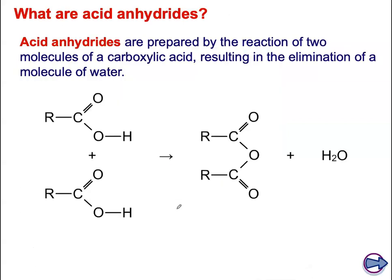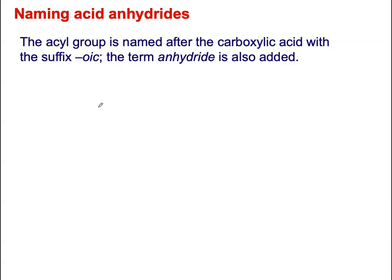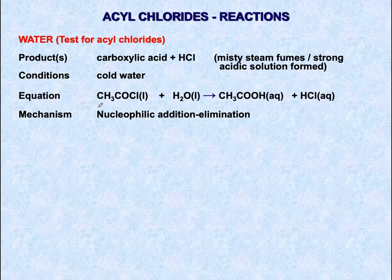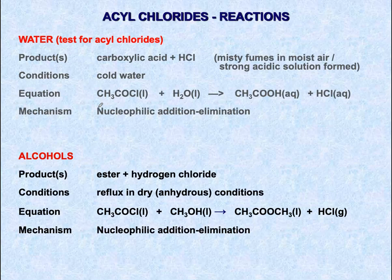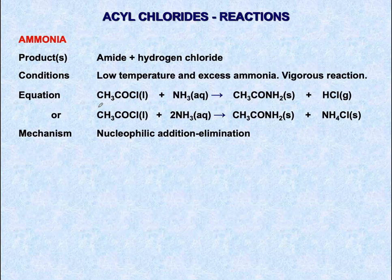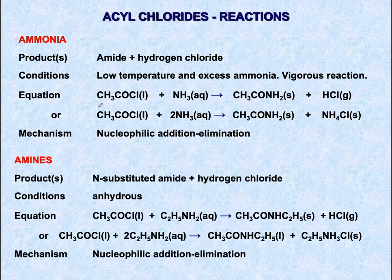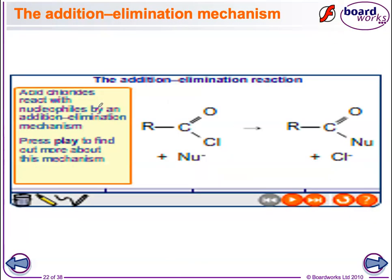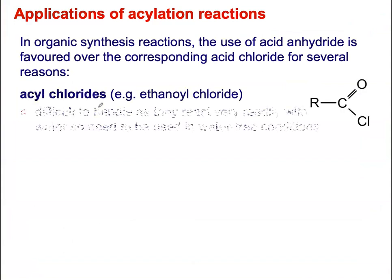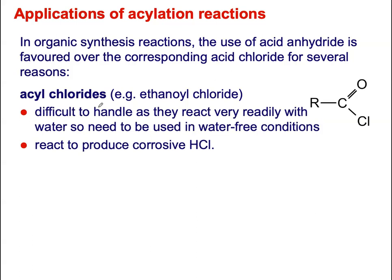That is pretty much the coverage of acyl chlorides, along with how acid anhydrides are formed. You can practise the mechanisms yourself. A nice summary: acyl chloride reacts with water, alcohol, ammonia, and primary amines. You can freeze the video to review these reactions. Acyl chlorides are difficult to handle — they react readily and vigorously with water to produce corrosive HCl, seen as white misty fumes.